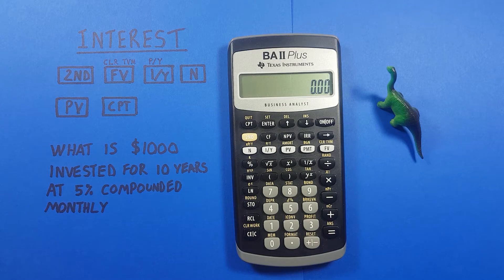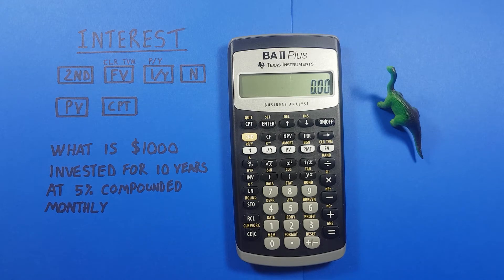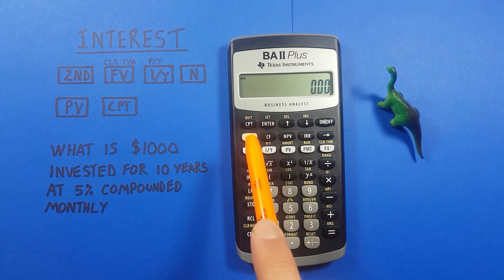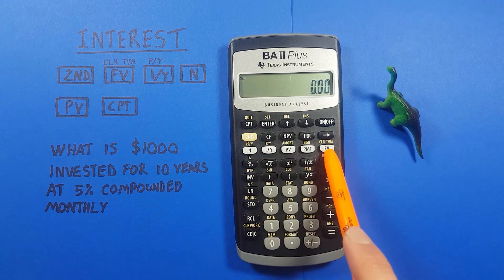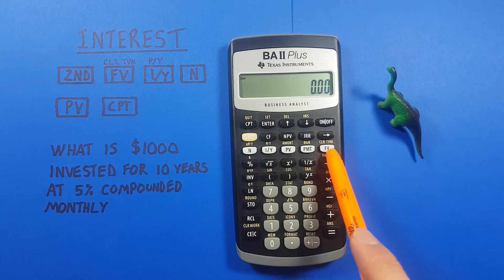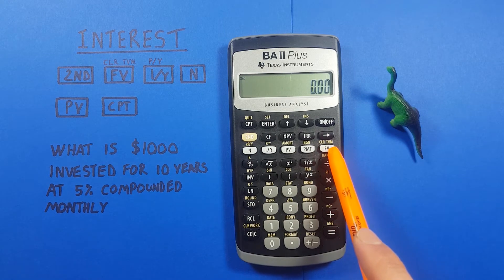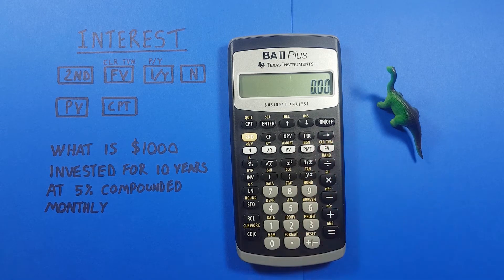First, we want to clear any old data to make sure we don't mix up or overwrite anything. To do that we go Second then FV — you can see the second function there is Clear TVM. We press that and there we go.